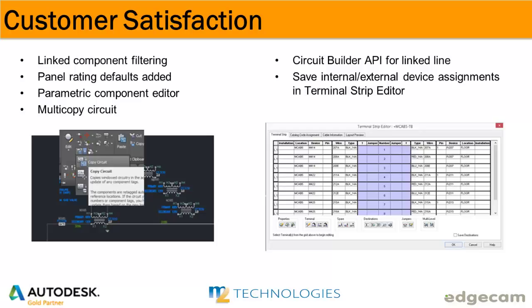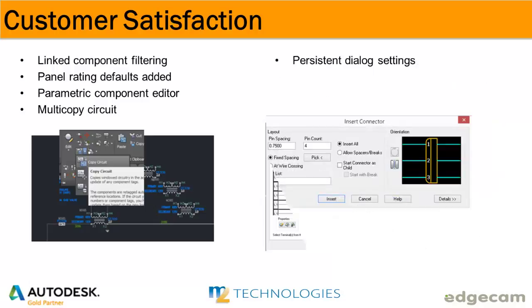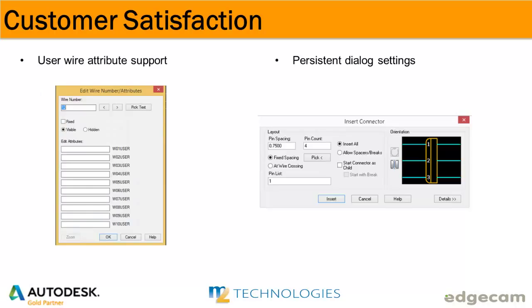A new circuit builder API is available to link components within a circuit with a dashed link line. A new check box on the terminal strip editor lets you save the internal and external device assignments. Wire number attributes are now fully supported, along with enhancements to connector settings. Wire number attributes W01 user through W10 user are now supported, and connector dialog box settings also remember across sessions.